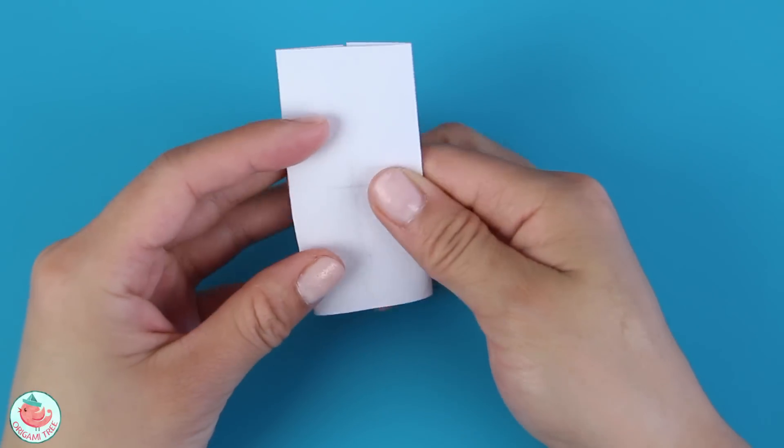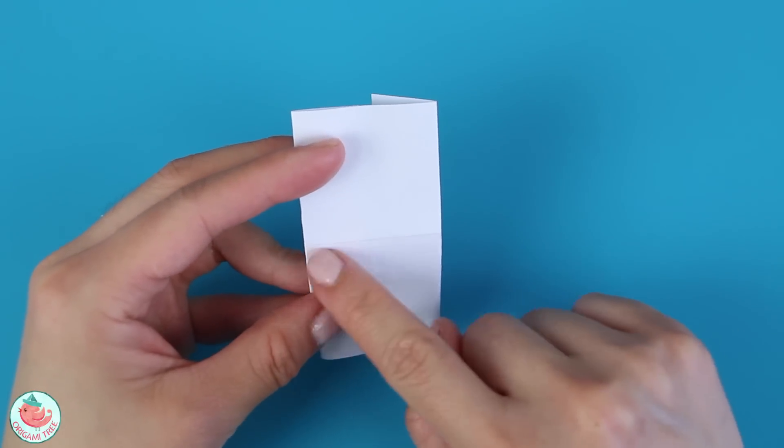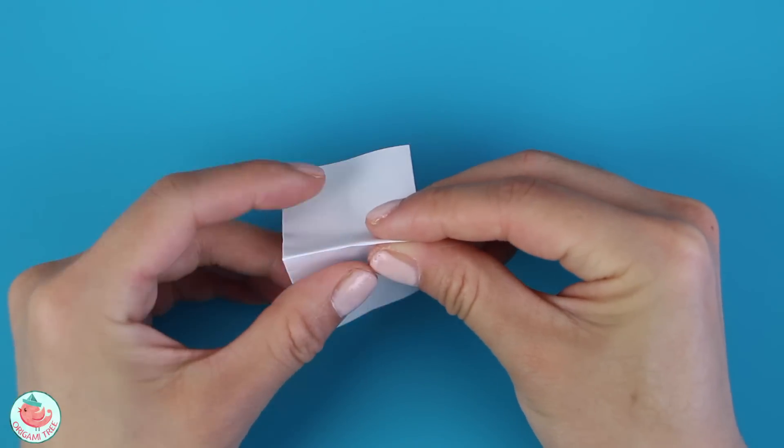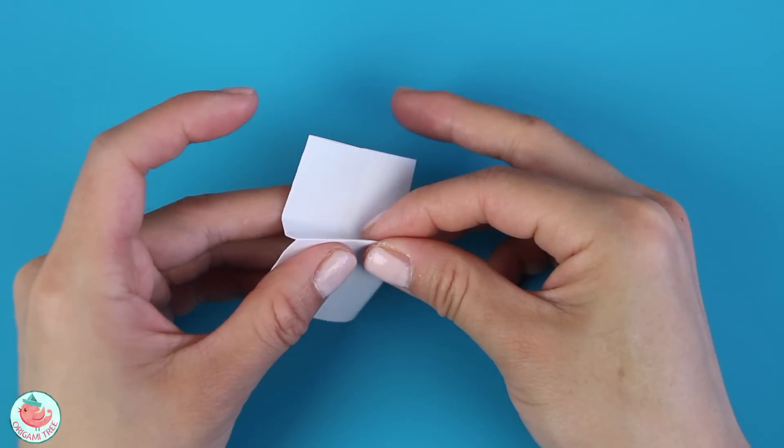After that, we're going to flip it over. So now we're going to take notice of this horizontal crease that we created earlier. And we want to fold it back. And then immediately fold it back up.